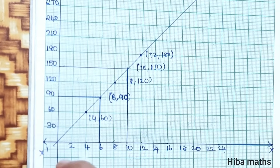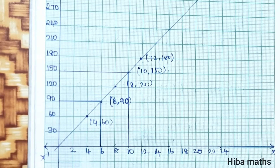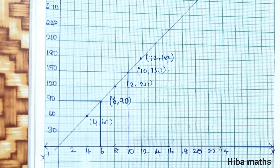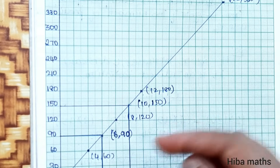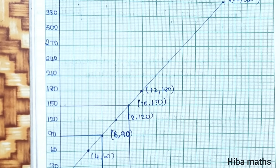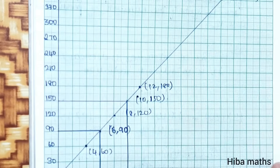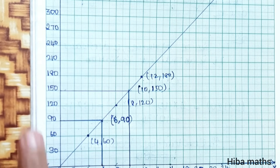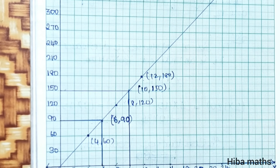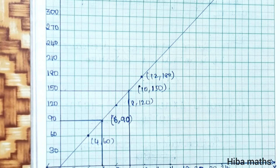On the y-axis, you can write values like 30, 60, 90, 120 and so on. Mark the scale, the points, and the answers clearly on the graph for full marks.